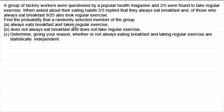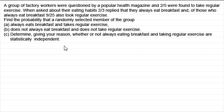We've got to find the probability that a randomly selected member of the group: in part A always eats breakfast and takes regular exercise; in part B does not always eat breakfast and does not take regular exercise; and in part C determine, giving your reason, whether or not always eating breakfast and taking regular exercise are statistically independent. At any point you might like to pause the video and try some of these questions, then come back and see if your solution compares to mine.